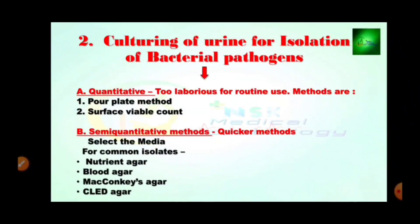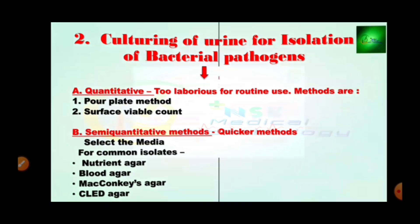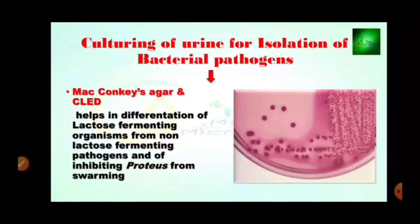For culturing of urine for isolation of bacterial pathogens, first is the quantitative method — laborious for routine use — including the pour plate method and surface viable count. Second is the semi-quantitative method using quicker approaches. Media for common isolates include nutrient agar, blood agar, MacConkey agar, and CLED agar. CLED agar is a special type of media. MacConkey agar and CLED agar help differentiate lactose-fermenting organisms from non-lactose-fermenting pathogens and inhibit Proteus swarming. Lactose-fermenting bacilli include E. coli, while non-lactose-fermenting organisms include others such as Chlamydia, confirmed by biochemical tests.